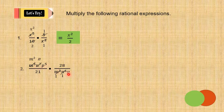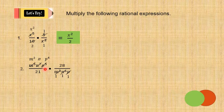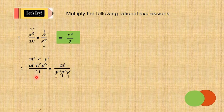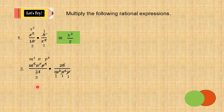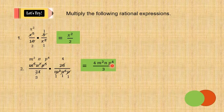p⁵ and p — the GCF is p. We're going to subtract the exponents. So p⁵ becomes p⁴ and p becomes 1. Next, let's go to 28 and 21. The GCF is 7. So we're going to divide both sides by 7: 21 divided by 7 is 3, and 28 divided by 7 is 4. After multiplying numerator to numerator and denominator to denominator, the answer is 4m²np⁴ over 3.